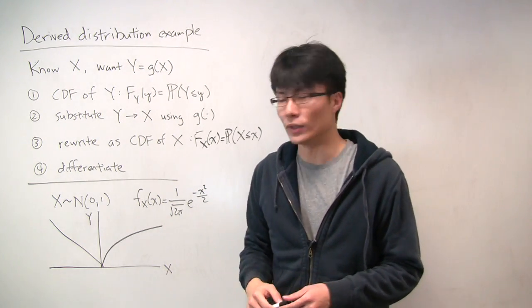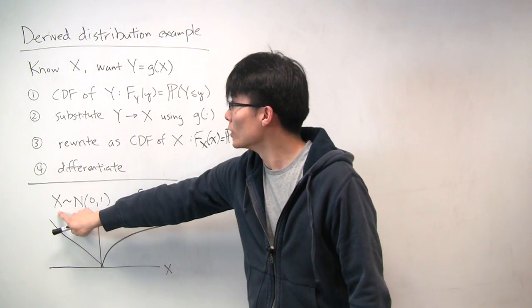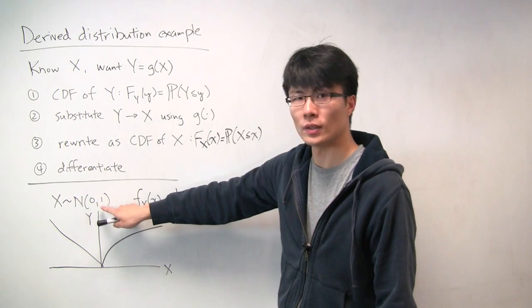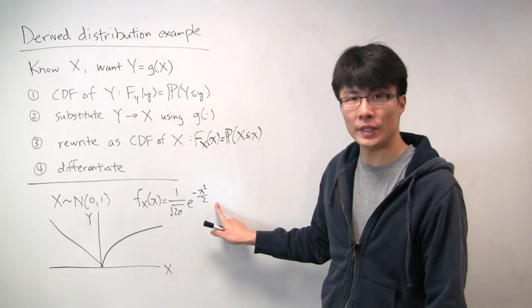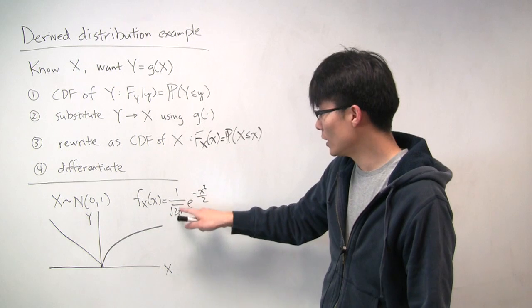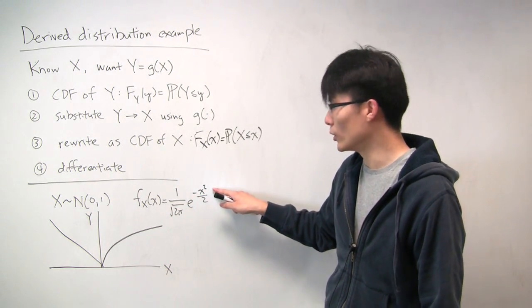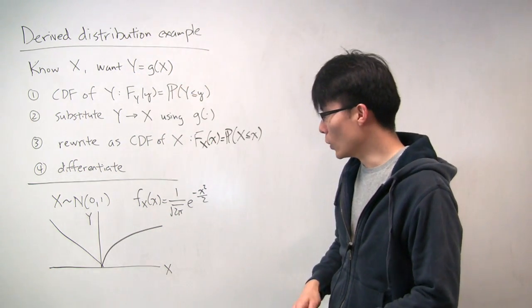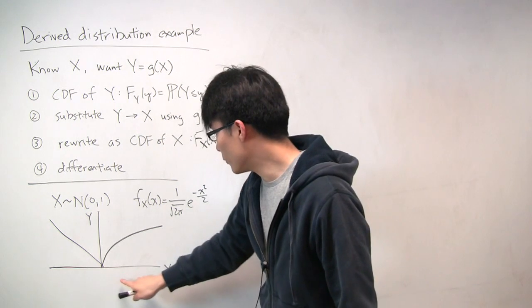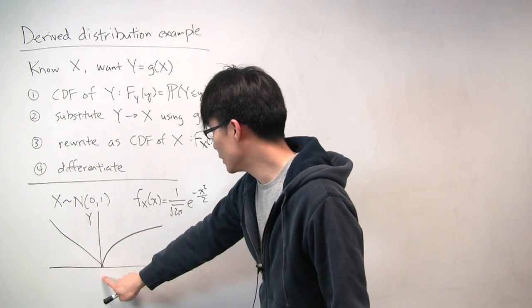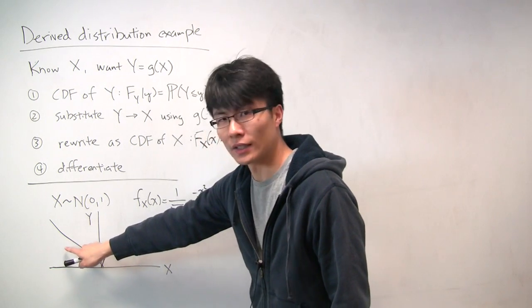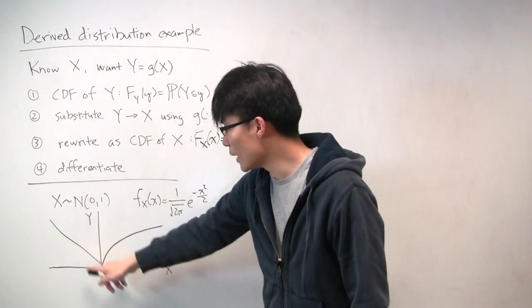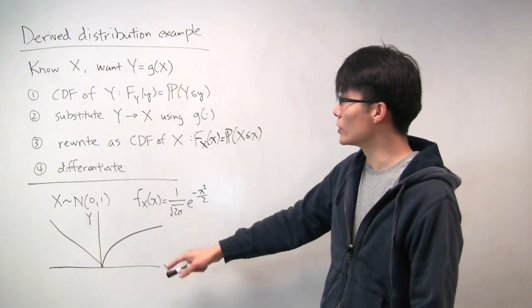In our specific example, x is a standard normal random variable, meaning mean zero and variance one. We know the form of the PDF: f of x is 1 over square root of 2π times e to the minus x squared over 2. The relationship between x and y is: if x is negative, then y equals minus x; if x is positive, then y equals the square root of x. This graph shows the relationship between x and y.